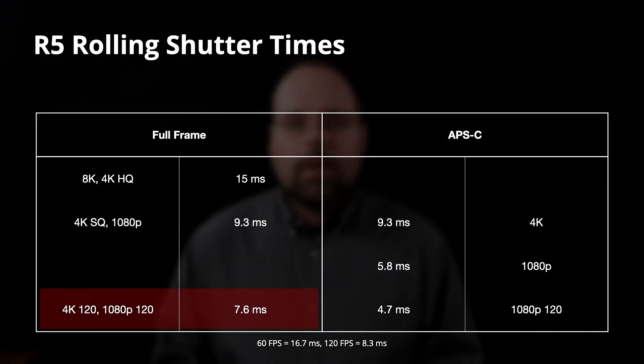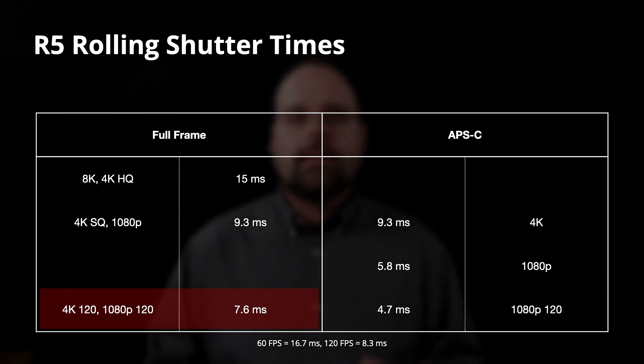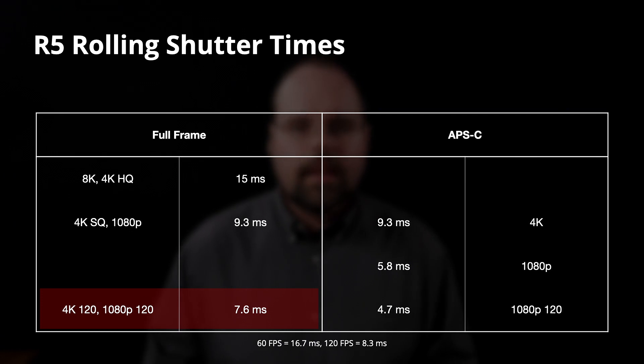All of these measurements apply for standard frame rates: 24, 30, and 60fps in NTSC, and 25 and 50fps in PAL. For the last thing I looked at — what does the camera do at 120 frames per second? In 4K 120 and 1080p 120 when shooting in full frame mode, the rolling shutter time is 7.6 milliseconds.